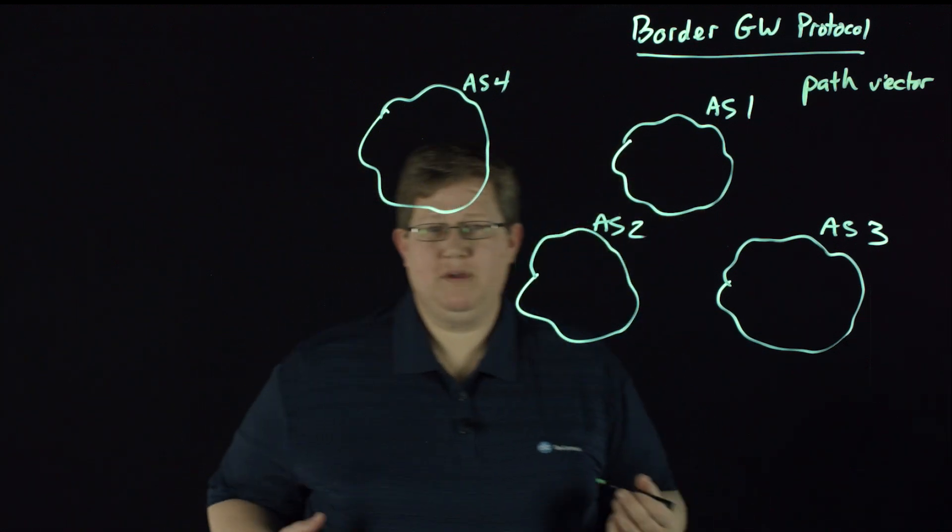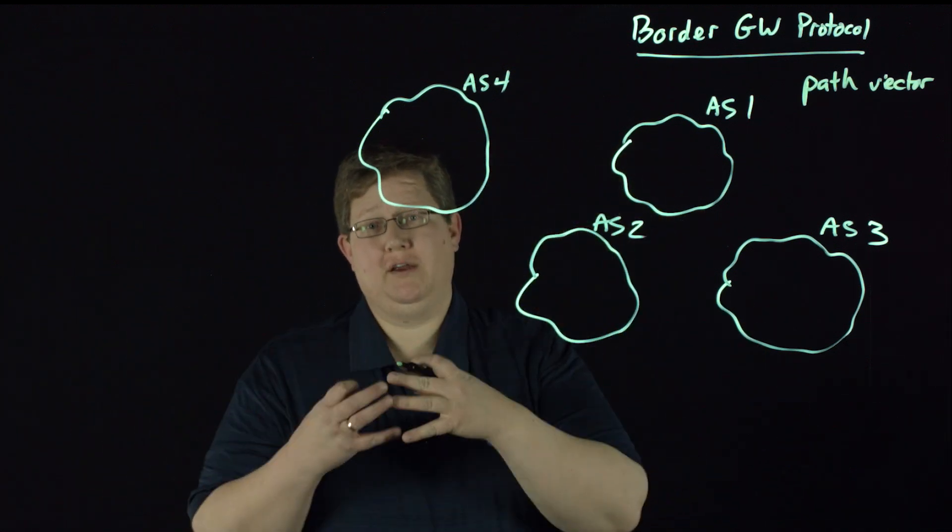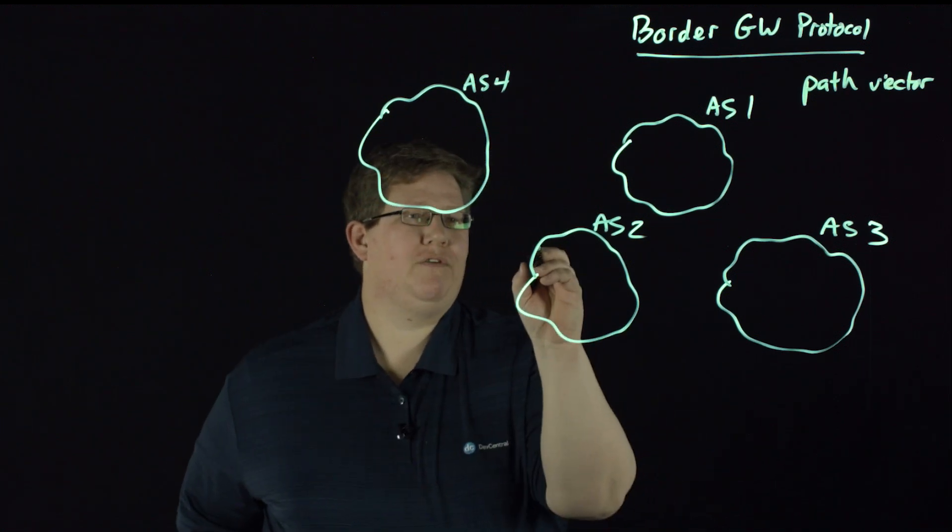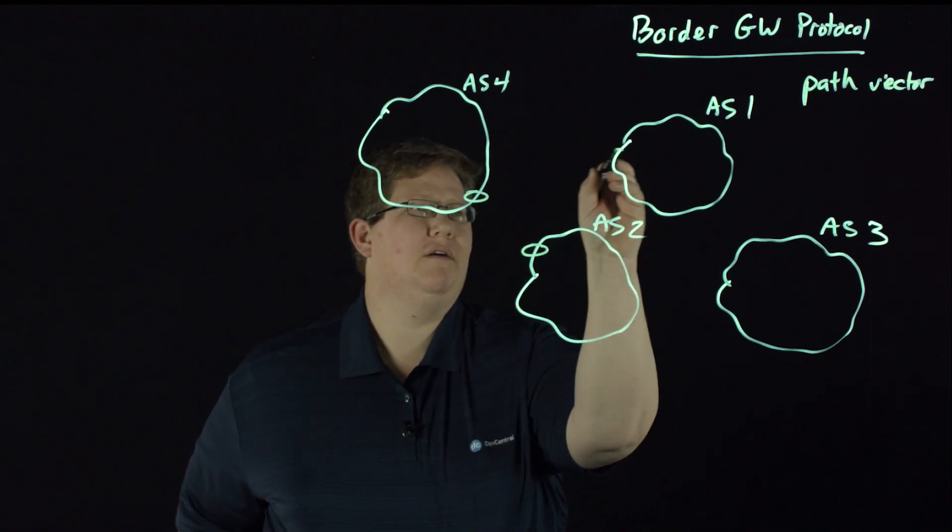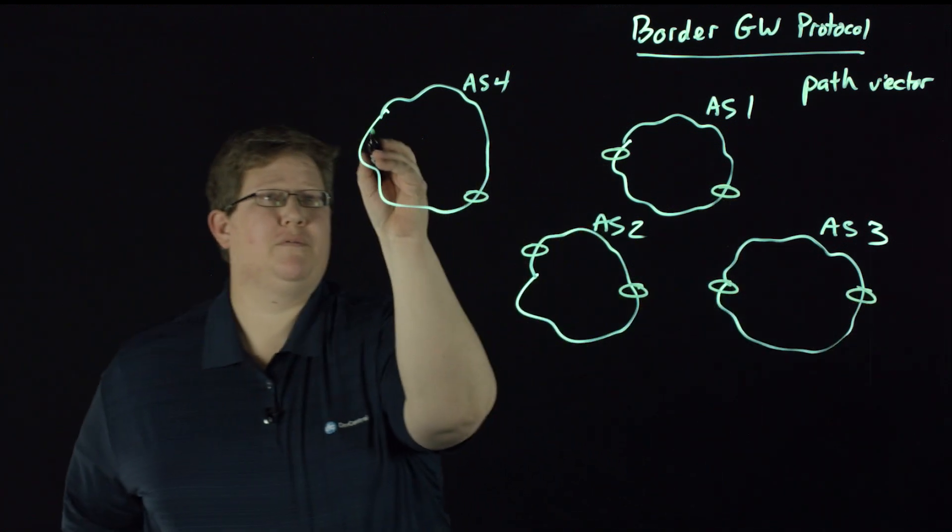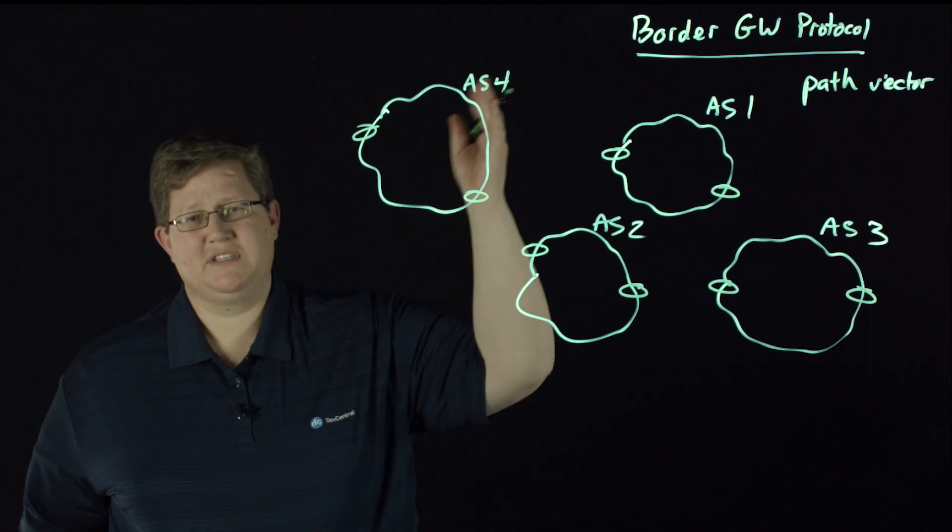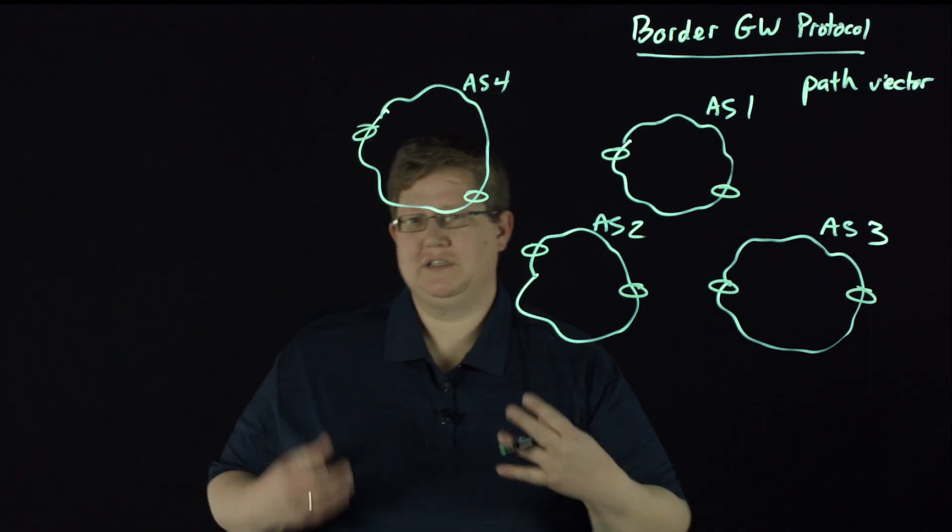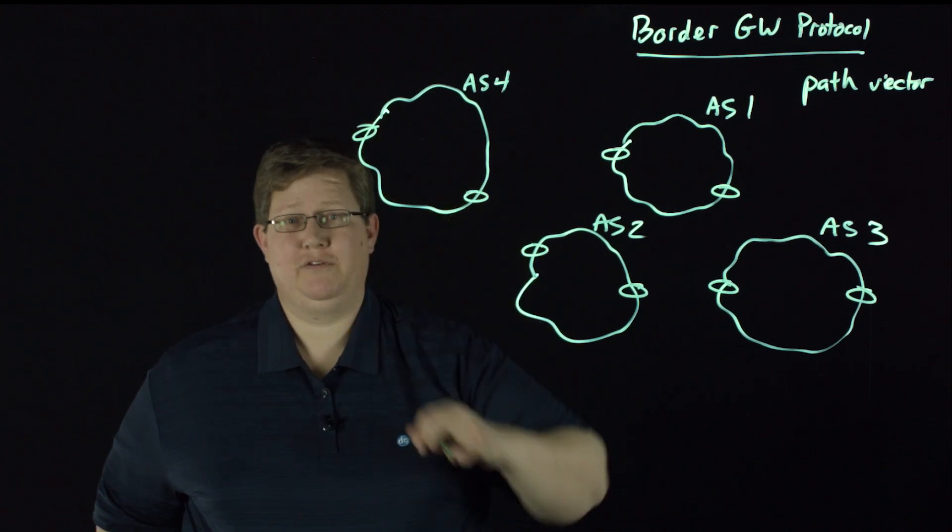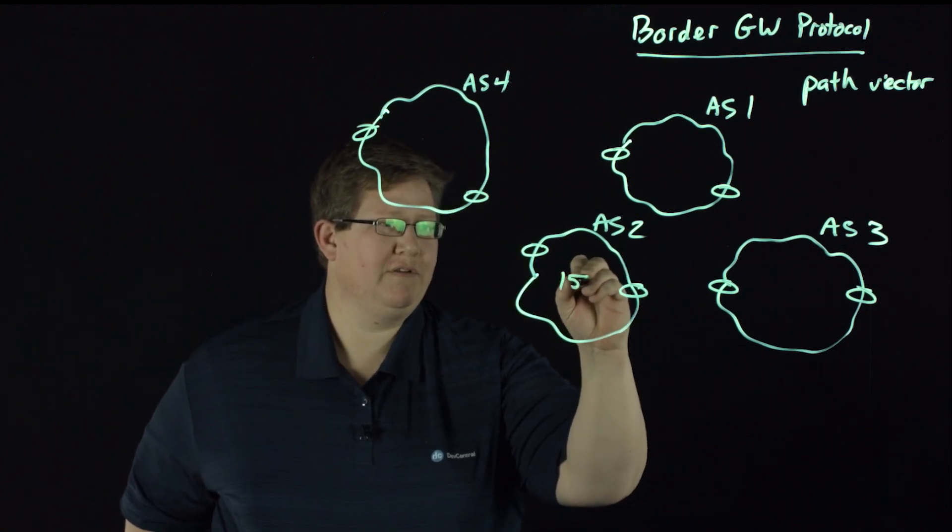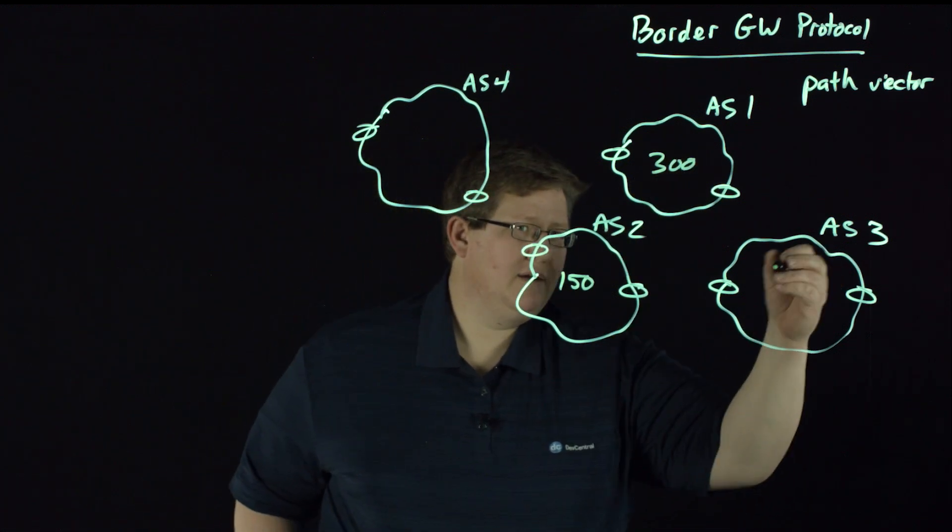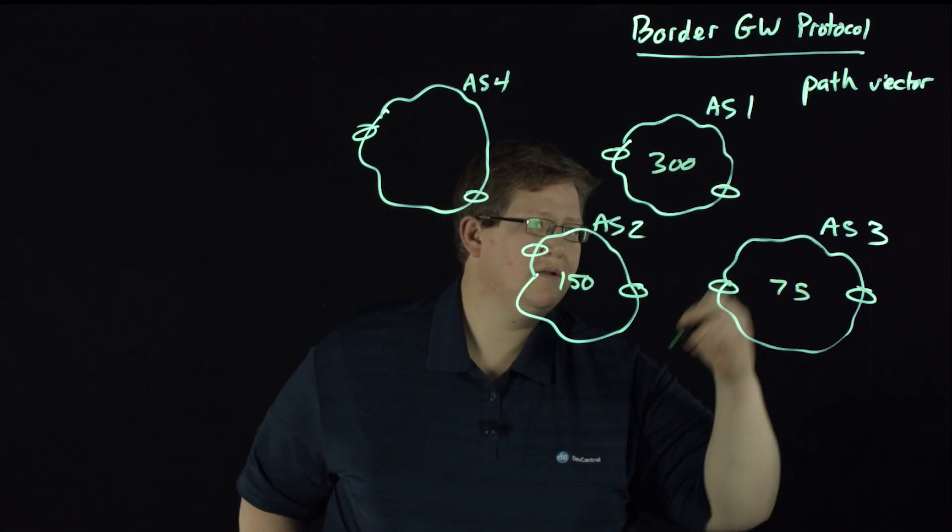The way BGP works is that you exchange routing advertisements between peers. So if you have routers here at the edges of all of these autonomous systems, you could have multiple routers. Say AS4 is a fairly small autonomous system, maybe they just have two routers. But maybe in AS2 there's 150 routers in here. And AS1, there's 300. And maybe AS3, there's 75.